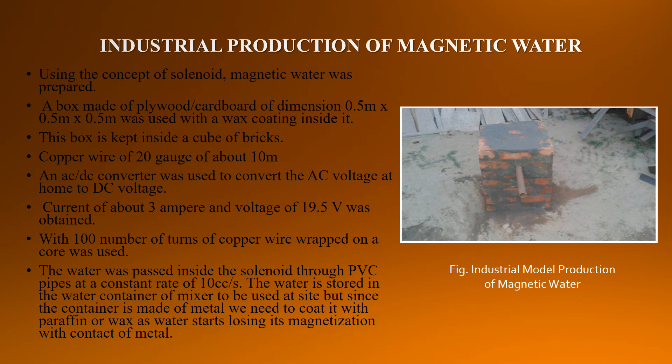Industrial production of magnetic water. Using the concept of a solenoid, magnetic water was prepared. A box made of plywood cardboard of dimensions 0.5 m × 0.5 m × 0.5 m was used with wax coating inside it, kept inside a cube of bricks. Copper wire of 20 gauge was used. An AC-DC converter converted AC voltage to DC voltage, obtaining a current of about 3 amperes and voltage of 19.5 volts, with 100 turns of copper wire wrapped on the core. Water was passed inside the solenoid through a PVC pipe at a constant rate of 10 CC per second. The water container must be coated with paraffin or wax, as water starts losing its magnetization upon contact with metal.